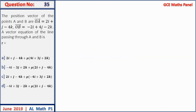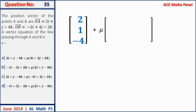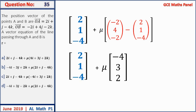Question 35: position vectors OA = (2, 1, 4) and OB = (−2, 4, −2). The vector equation of the line is OA + μ(B − A). B − A = (−4, 3, −6). So the line equation is (2, 1, 4) + μ(−4, 3, −6). Answer C.